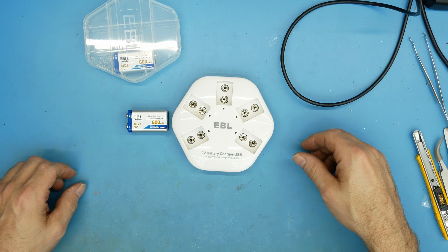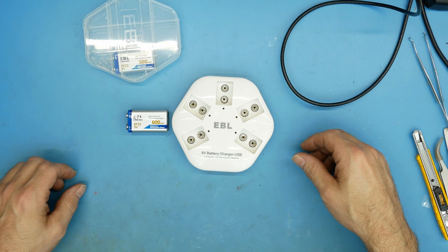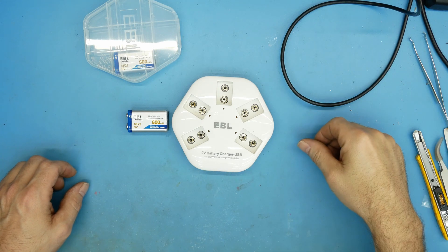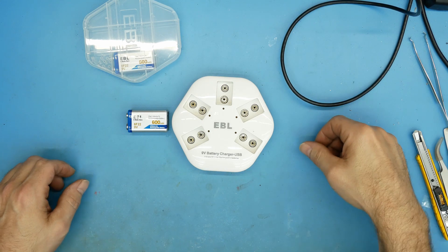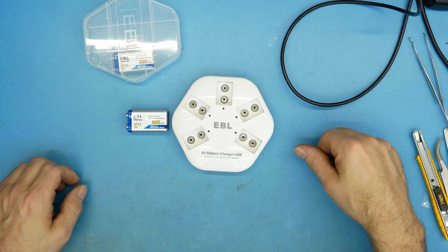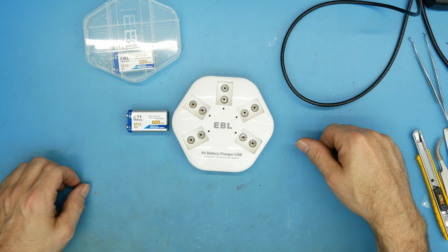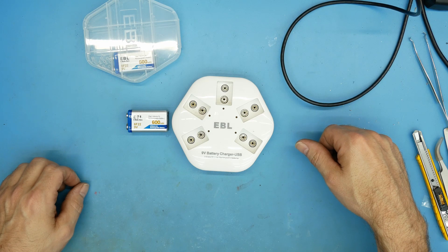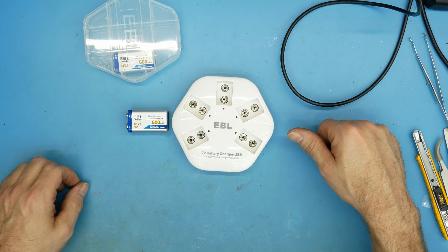9-volt alkaline batteries are kind of expensive - 10 bucks for one sometimes, you can get them on sale. I've tried the various nickel metal hydride 9-volts and they just don't have the capacity.